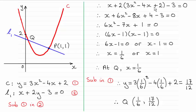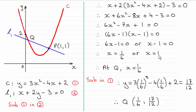Simply expand the brackets and rearrange it so you can group it as a quadratic equation that equals 0. This equation factorises to (6x − 1)(x − 1). Putting each factor equal to 0 gives us x = 1/6 or x = 1.